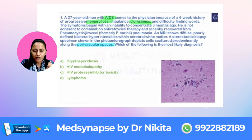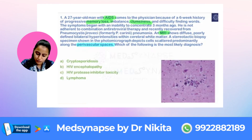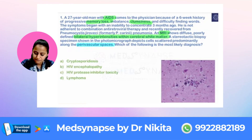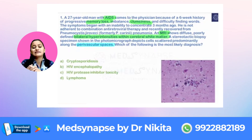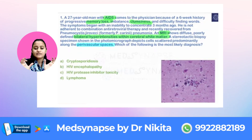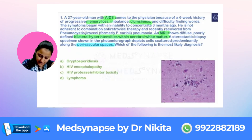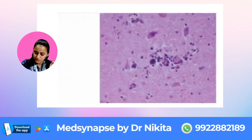MRI shows diffuse, poorly defined bilateral hyperintensities within the white matter. So this is a diagnosis of HIV encephalopathy.